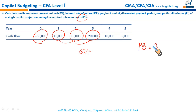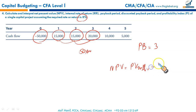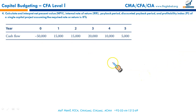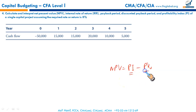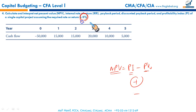Payback period is the time it takes to recover your initial investment. NPV equals the present value of inflows minus the initial investment — or the present value of outflows. Basically, NPV equals present value of inflows minus present value of outflows. If NPV is positive, the project generates more than 8%. If NPV is negative, it generates less than 8%. If NPV is zero, the project generates exactly 8%. Positive NPV is desirable.